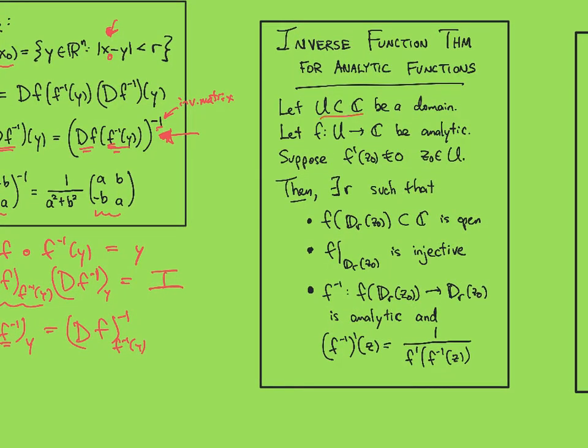So we start with a domain in the complex plane, and we start with an analytic function. And now if its derivative is nonzero at some point in U, then there exists an r, which is the size of a disk, such that f applied to that disk is open and f restricted to that disk is injective.